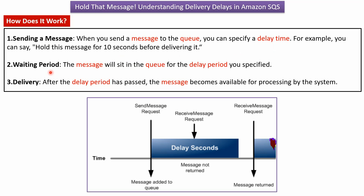Step two is the waiting period. The message will sit in the queue for the delay period you specified. Step three is delivery. After the delay period has passed, the message becomes available for processing by the system.